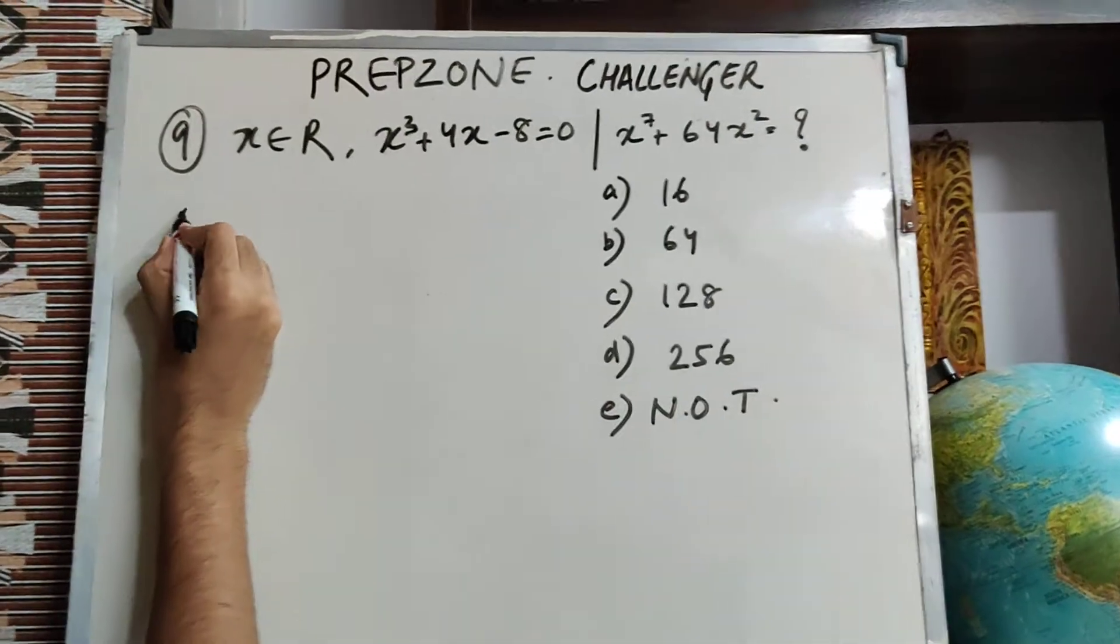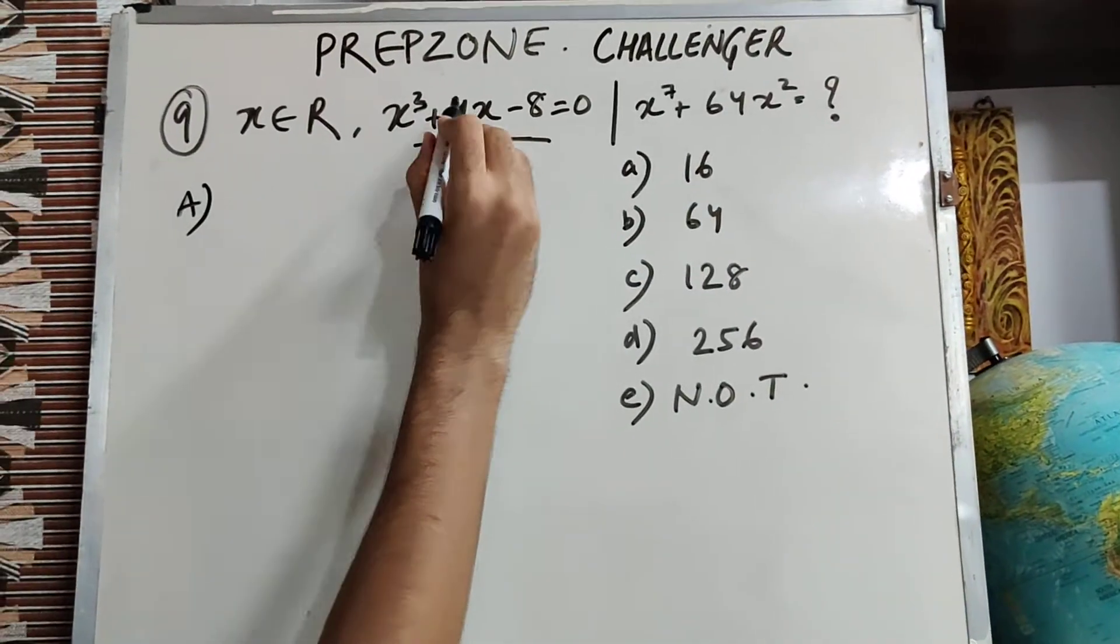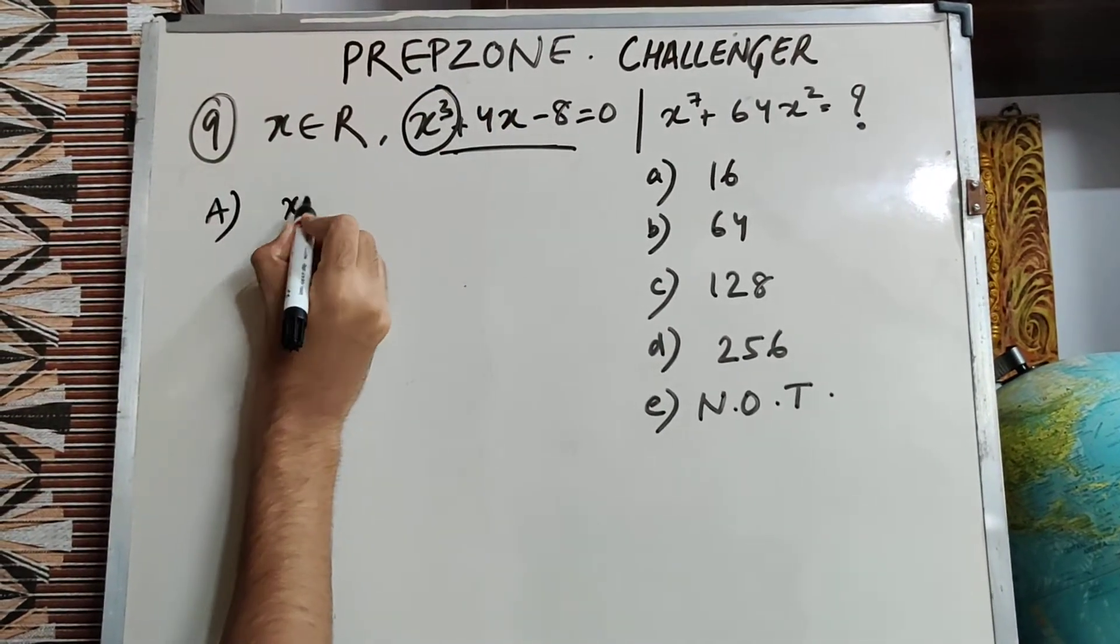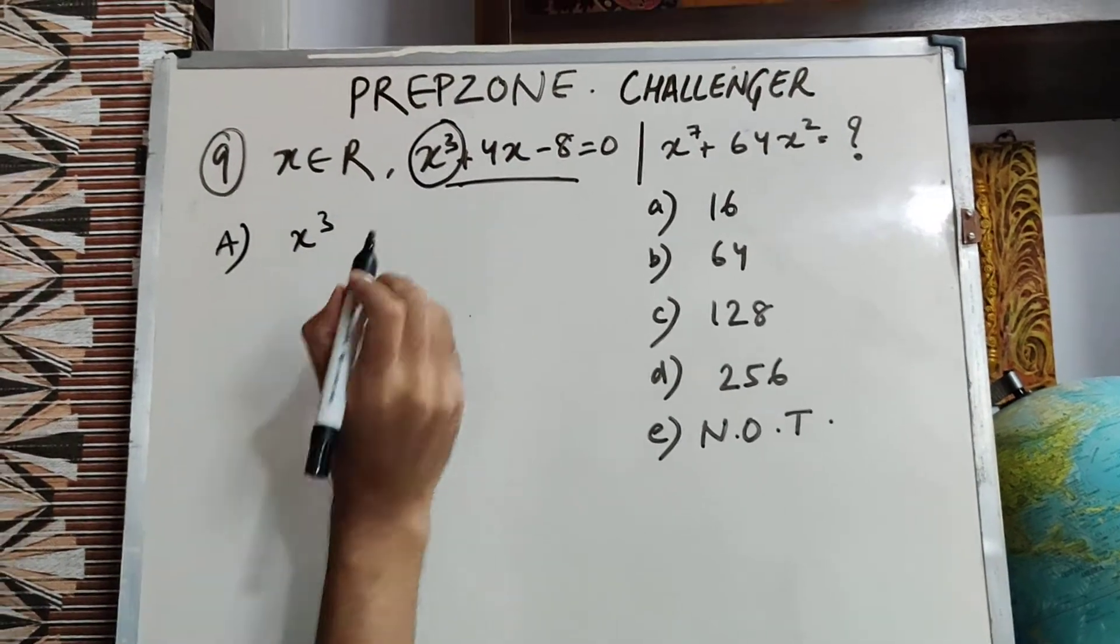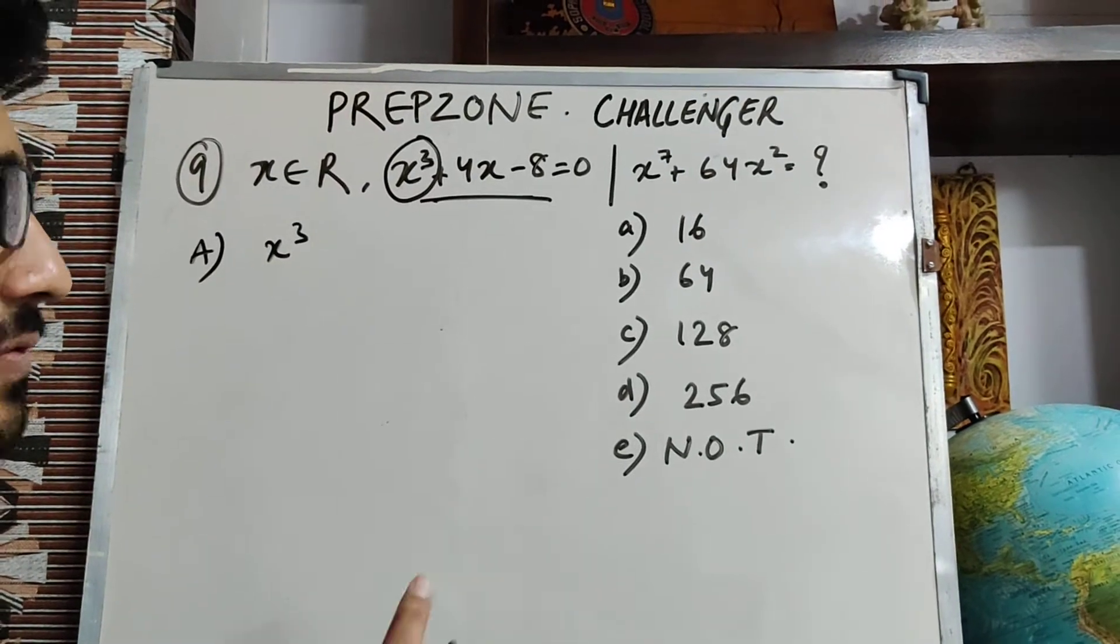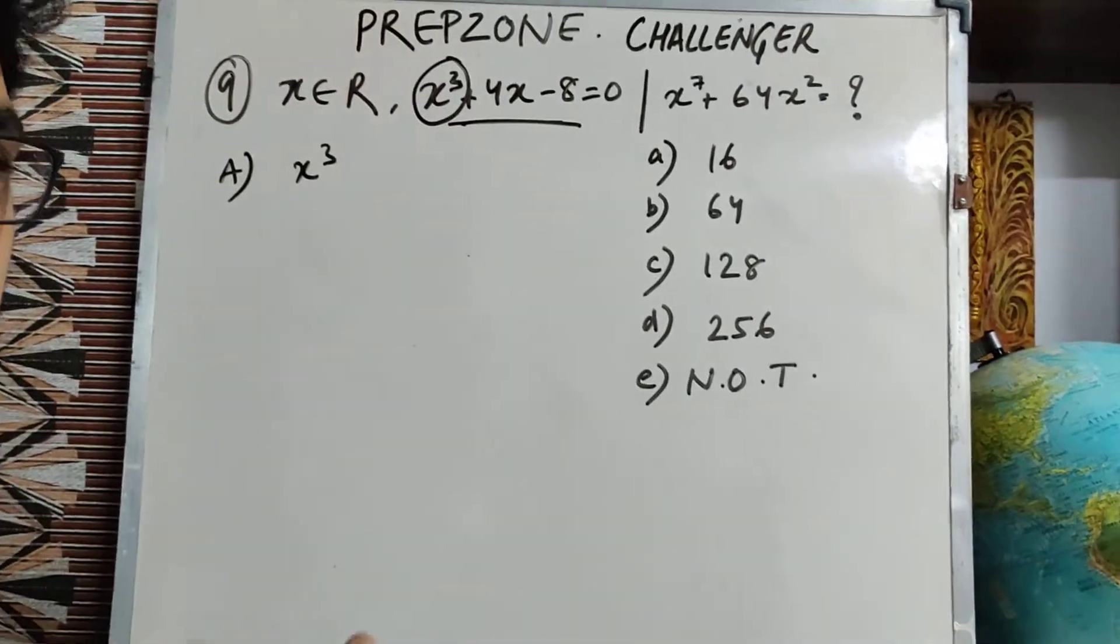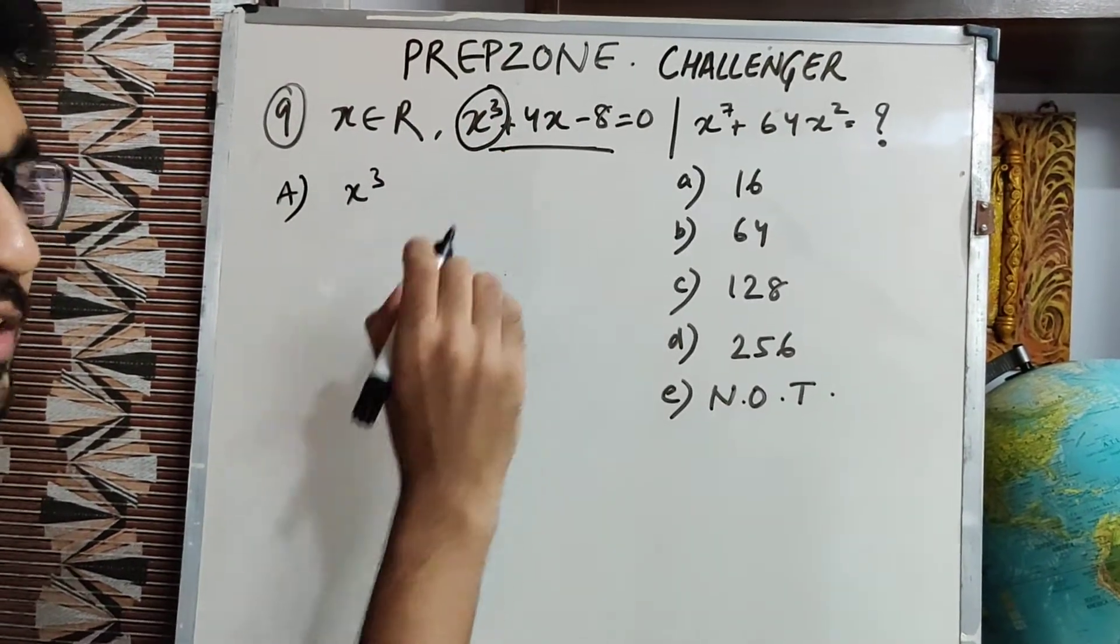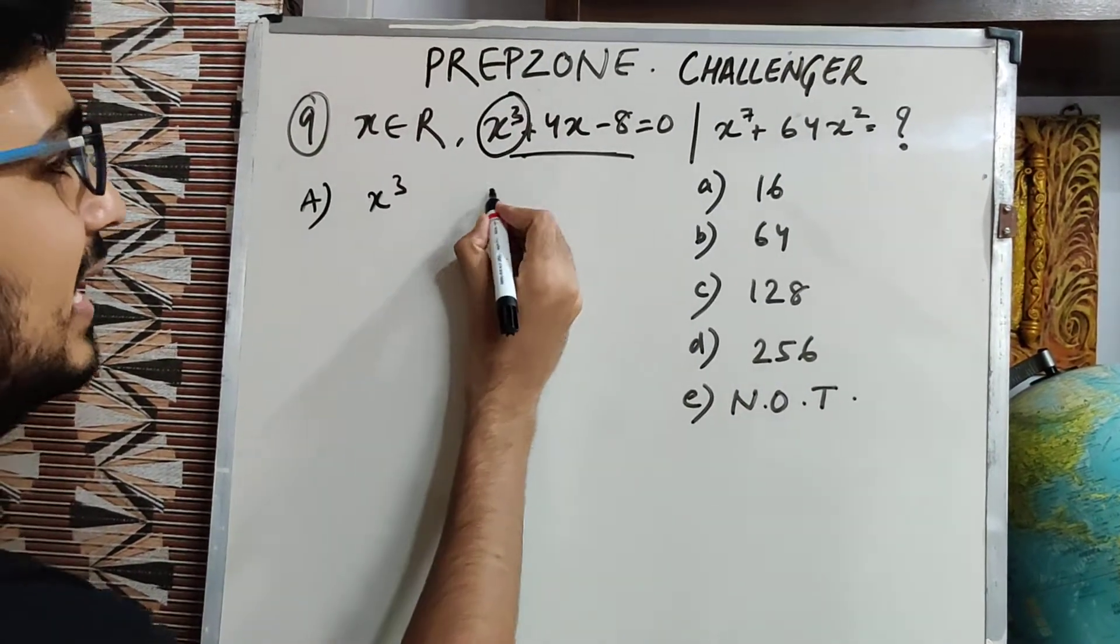Now yes, look guys, there are two simple steps. One step is that for the equation given, what is the maximum power? The maximum power is x³, right? I will repeat this in English as well for the students from South India who are not able to understand Hindi. First part is: identify the maximum power of the equation that is given in the question.